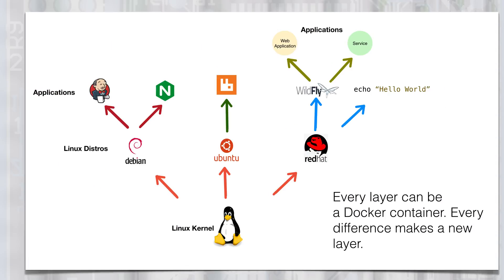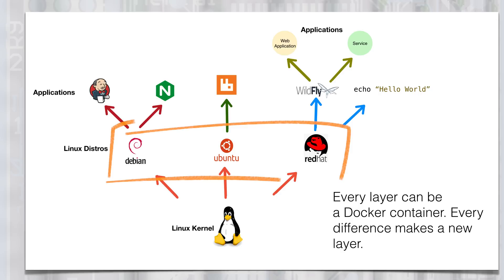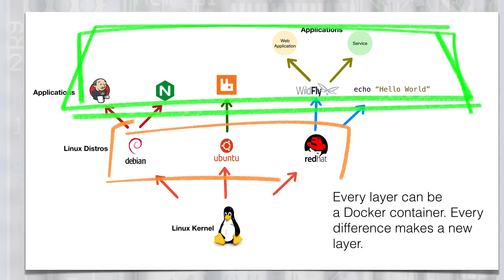Docker does this through a layered file system. Docker starts with a Linux kernel that all containers use, then it layers the differences on top of the kernel. For example, the libraries for each distro are layered on top of the Linux kernel, then apps are layered on top of the distros. Even a command like echo hello world can be made into a container. Compare that to a virtual machine that often requires hundreds of megabytes, even gigabytes. Using Docker containers means we can run many more containers than virtual machines, and set up larger environments on a single developer machine. The operating system might be gigabytes, but the differences between our Docker containers might be just a few megabytes, meaning we can have many instances all on one machine.